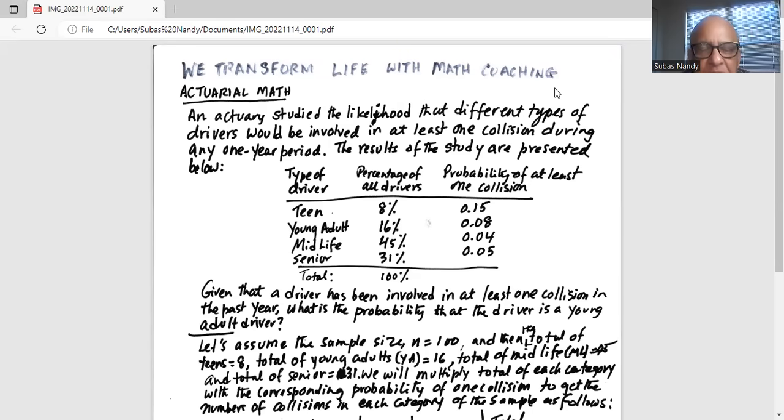So for example, for teen, it is 0.15. For young adult, 0.08 and so forth. Given that the driver has been involved in at least one collision in the past year, what is the probability that the driver is a young adult driver?